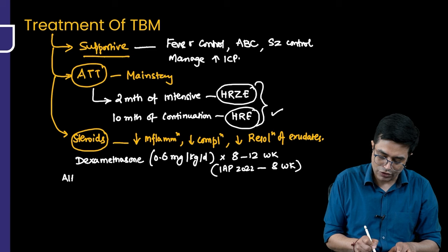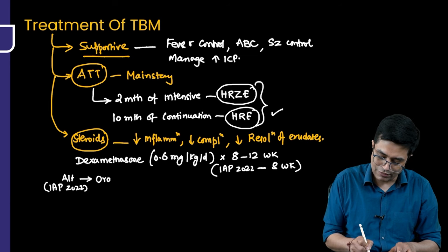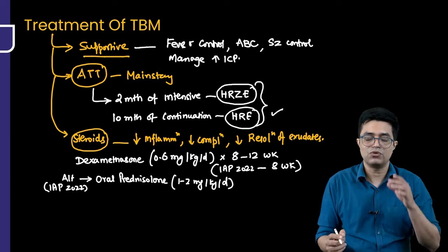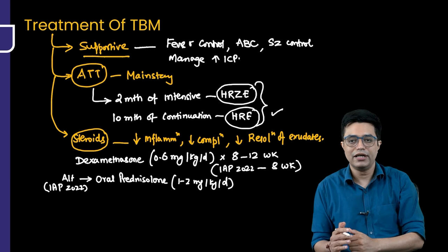Oral prednisolone is given at 1 to 2 mg/kg/day for the same duration—four weeks of high dose steroids, then tapering.